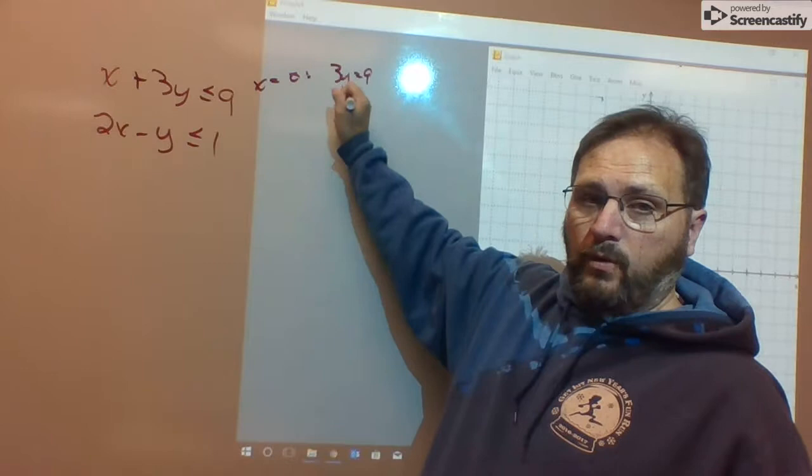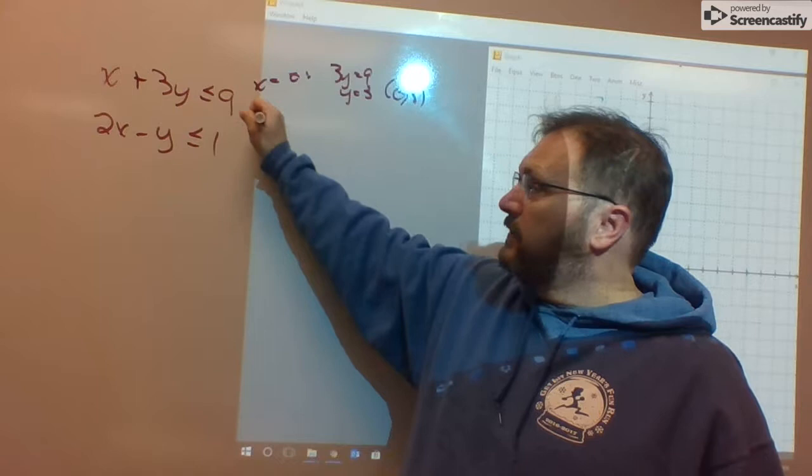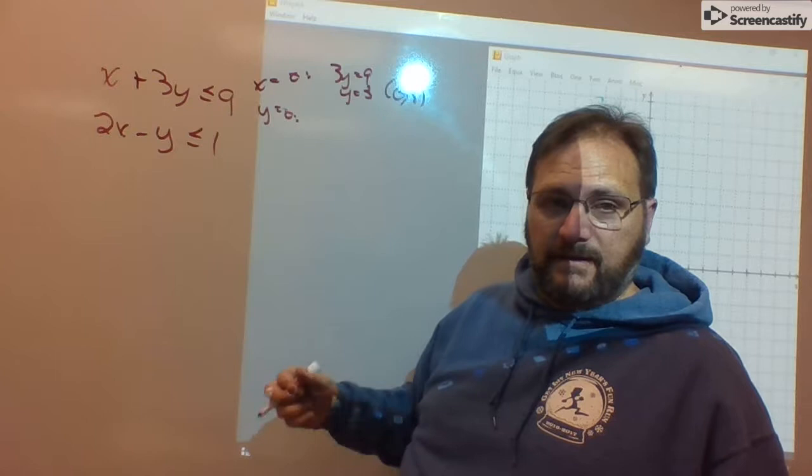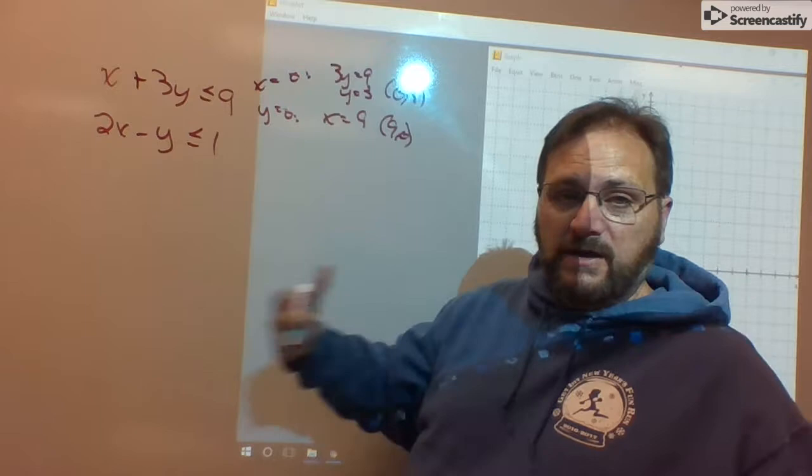If x equals 0 in the first one, we have 3y equals 9 or y equals 3. Plot the point 0, 3. If y equals 0 in the first one, then we're going to have just x equals 9. Plot the point 9, 0.